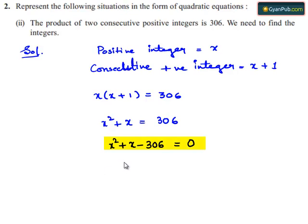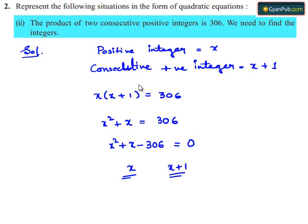Where x is the positive integer, this is found by solving this equation and x plus 1 is the consecutive positive integer. So the given condition can be represented in the quadratic equation as x square plus x minus 306 is equal to 0.